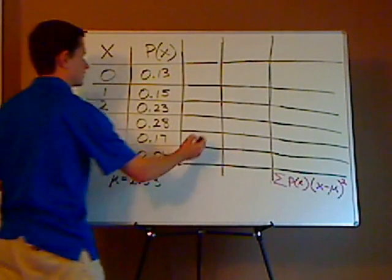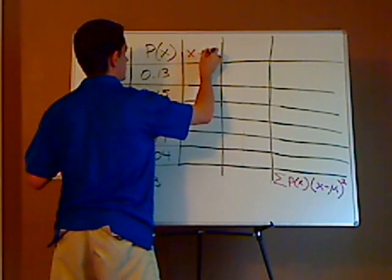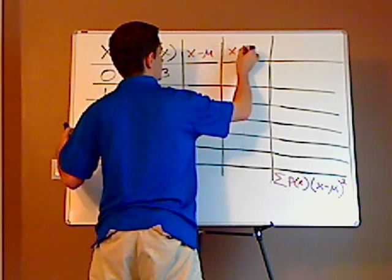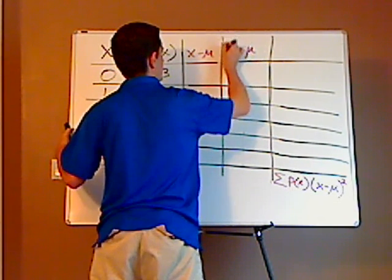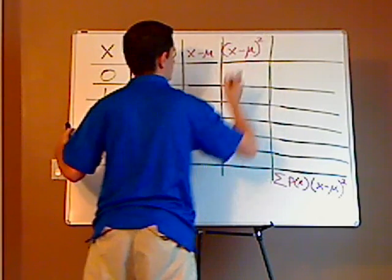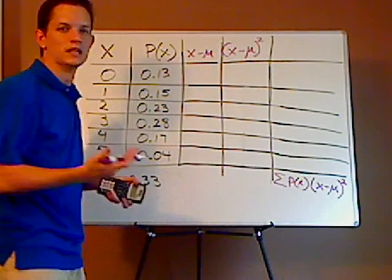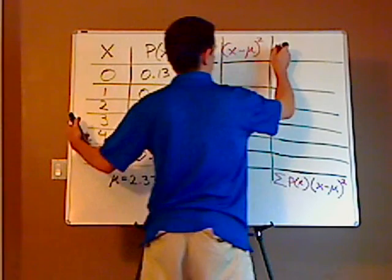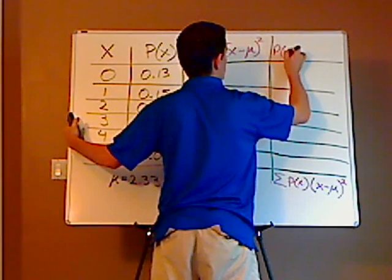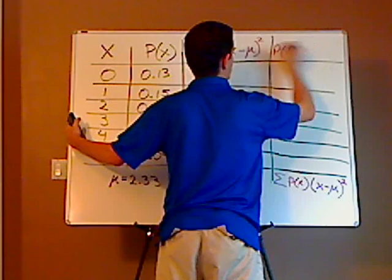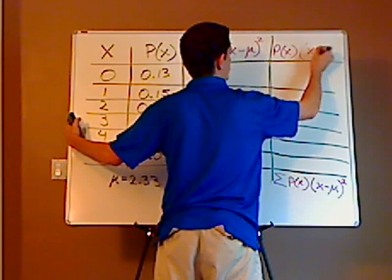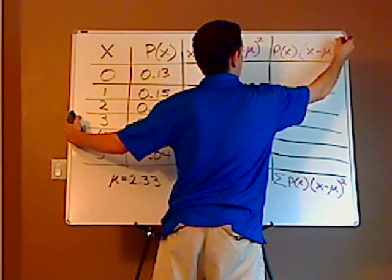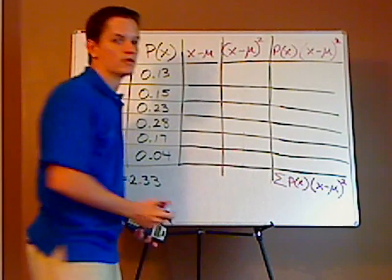So this column is going to be X minus μ. This is going to be (X minus μ) squared. μ is the mean, it's just a Greek letter. And then in this column we're going to do P(X) times this column, (X minus μ) squared. So that's what we're going to do.